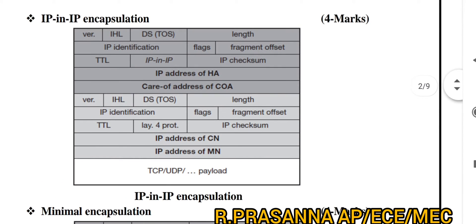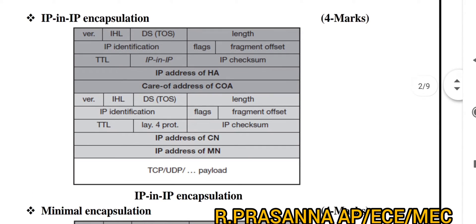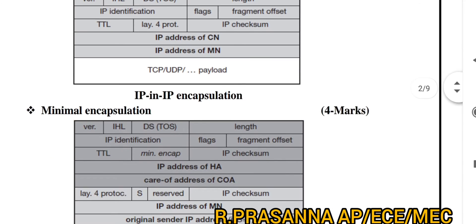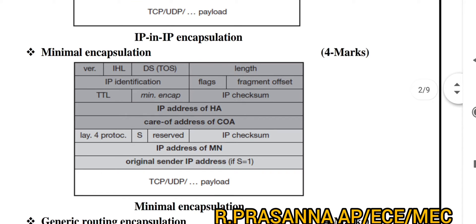If you look at the first question, you will discuss CN, MN, COA, and HA. In the diagram, you will try to explain the fields and provide additional fields in this format. IP-in-IP Encapsulation is covered first, then you will see Minimum Encapsulation. Finally, the diagram for Minimum Encapsulation will be covered.